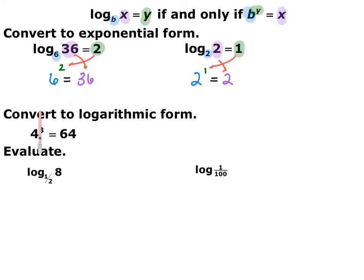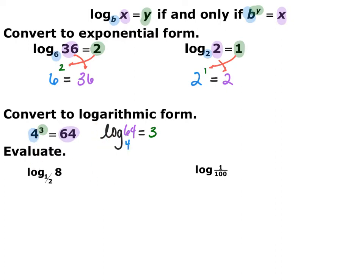Now go ahead and convert the other direction. Given the exponential 4 cubed equals 64, write that in logarithmic form. Going the other direction: log base 4 — whatever the base of your exponent is — and then input and output switch. What was originally your output is now the input, and what was originally your exponent is now your output. What do I have to raise 4 to to get 64? I raise it to the third power.